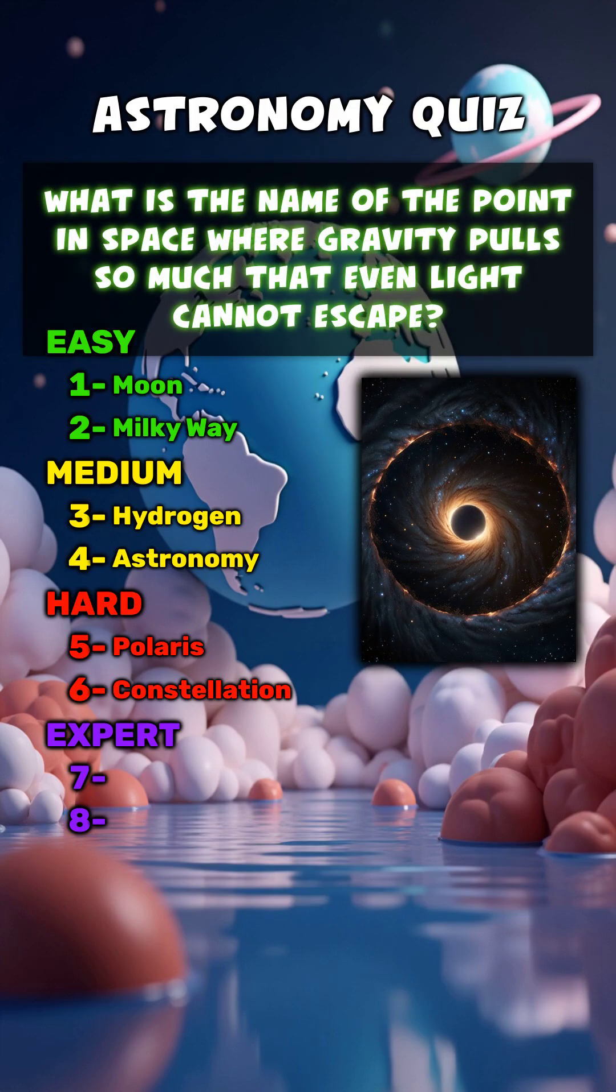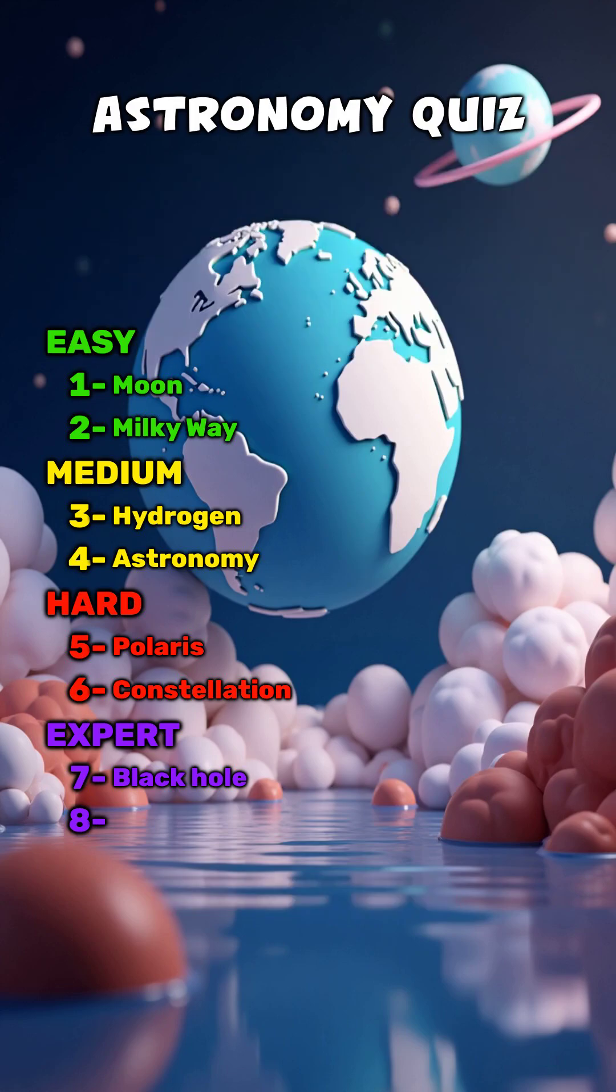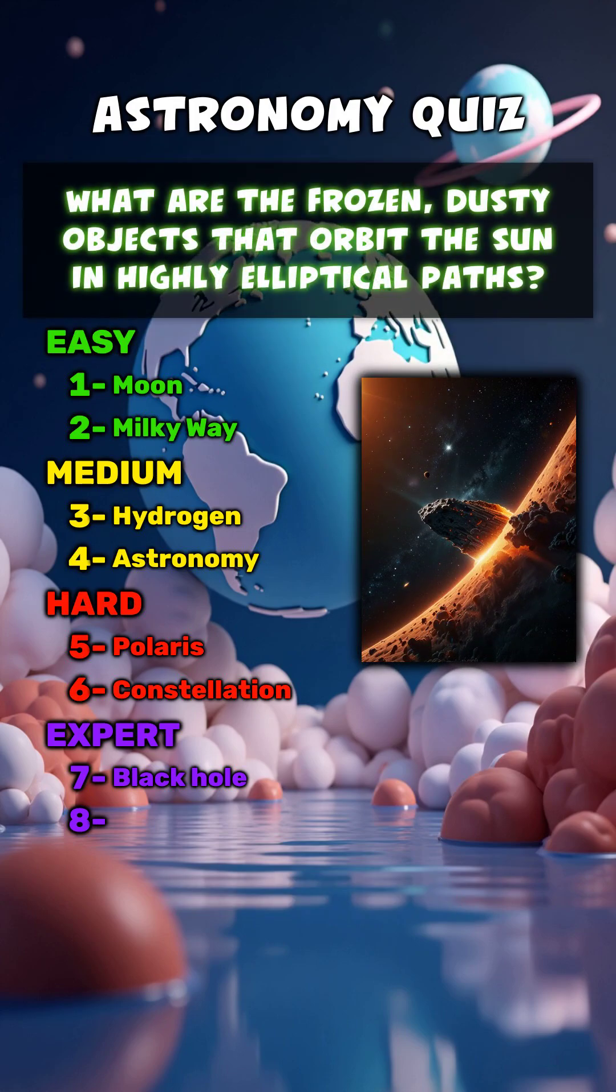What is the name of the point in space where gravity pulls so much that even light cannot escape? Black hole. What are the frozen, dusty objects that orbit the sun in highly elliptical paths? Comets.